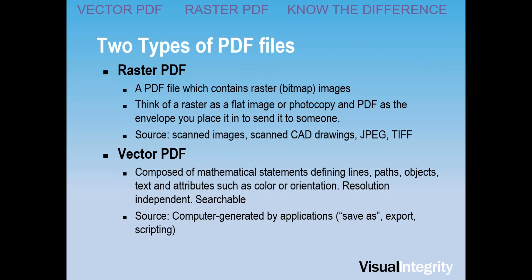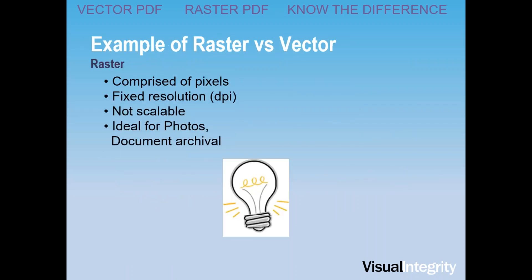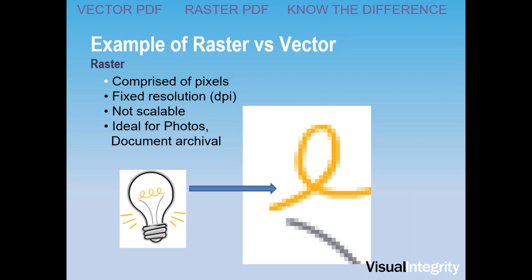Vector PDFs are composed of geometry that defines all of the objects, lines, text, and attributes in the file. They're resolution independent and searchable. The main difference in creation is that vector PDF files are computer generated — created through scripting, through save-as, through export in applications — whereas raster PDFs are scanned or otherwise saved as image files. An example of a raster versus vector: a raster image looks pretty good from a distance, but it's comprised of pixels, it's a fixed resolution, and it's not scalable. When you zoom in, it gets all jagged — that's one characteristic way to tell if a PDF is raster or vector.